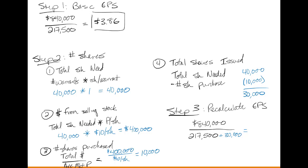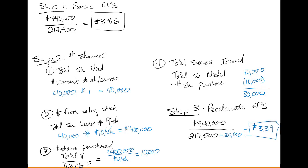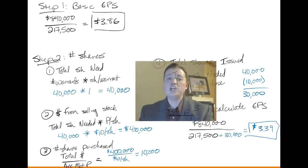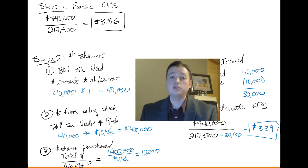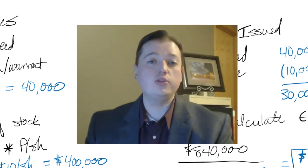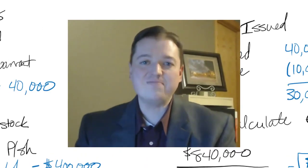The calculation is $840,000 divided by 247,500 shares, giving diluted EPS of $3.39. If that were the only dilutive security, we'd report $3.86 as basic earnings per share and $3.39 as diluted earnings per share, and the income statement would be done. But there's more — we still have to talk about convertible securities that further dilute these numbers. That's what we'll jump into in our next discussion.